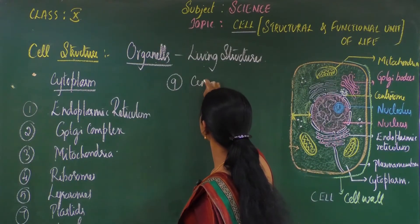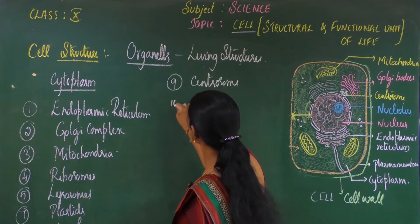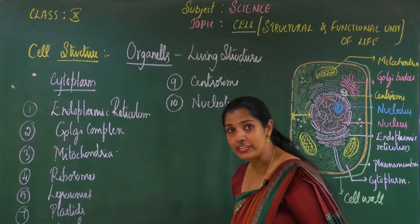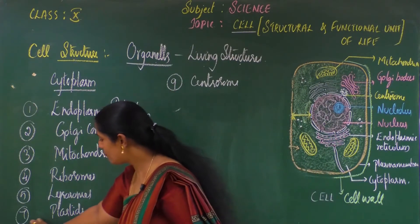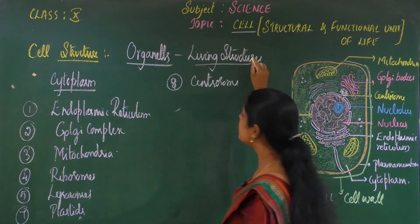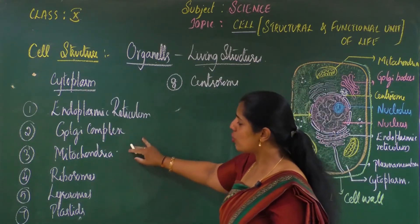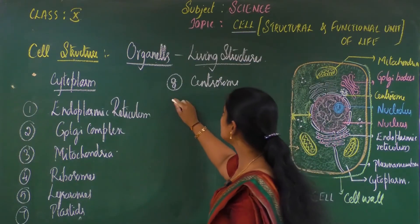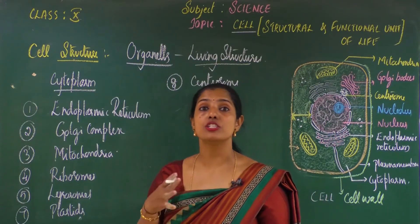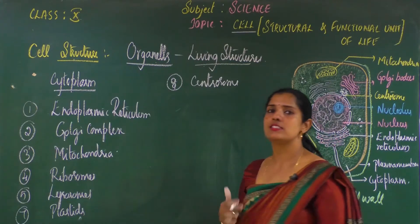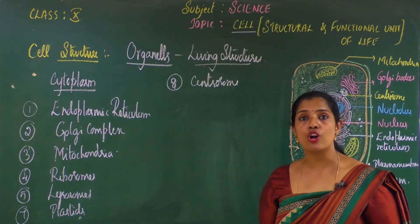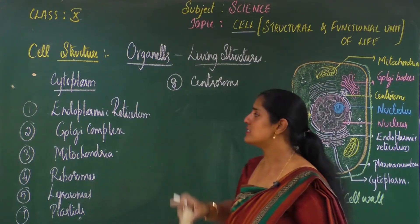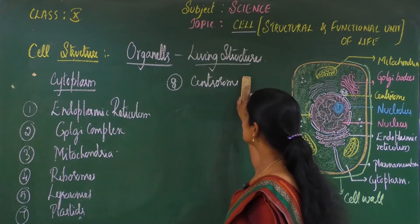Then we have centrosome and nucleolus. Nucleolus is not strictly an organelle but is an important part of the cell. We will discuss eight different major organelles which are responsible for the cell to perform its active role in the body. Now let us understand the endoplasmic reticulum first.